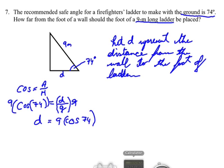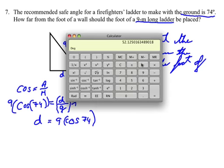And so now, pick up your calculator, and 9 times cosine 74, and so comes out to be approximately 2.48.